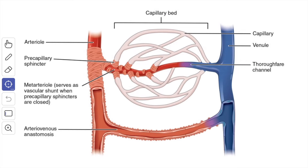Next, we will see about the pre-capillary sphincters and the thoroughfare channel. Arteriovenous anastomoses control blood flow through relatively large segments of the capillary bed. Much smaller segments can be individually controlled, as capillaries arise as side branches of the terminal arteriole. The initial segment of each such branch is surrounded by a few muscle cells that constitute a pre-capillary sphincter.